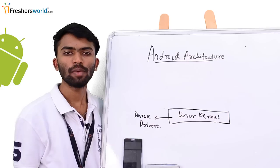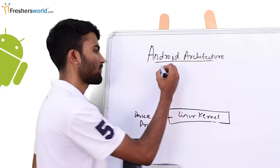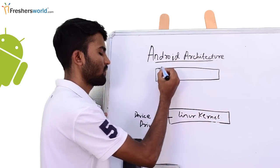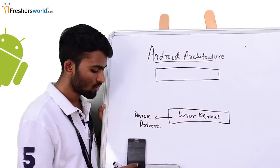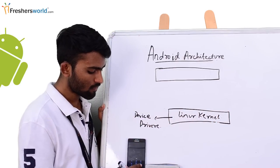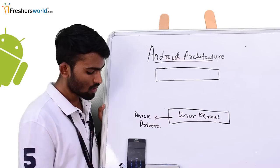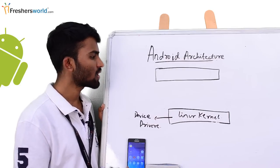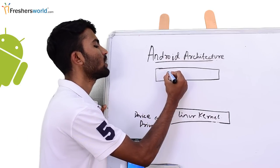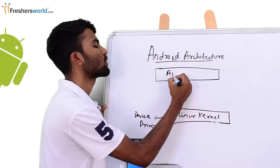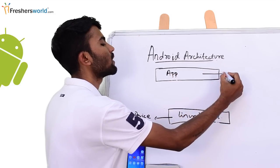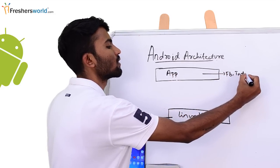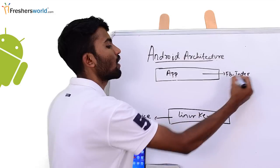Coming to the topmost layer — as you can see in my phone, I have apps installed on my phone. So you're able to see it. This would be the topmost layer. The apps can be Facebook, Tinder, or even WhatsApp.